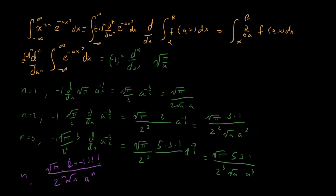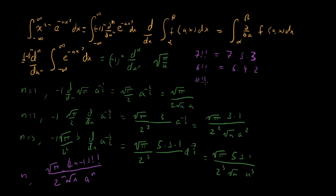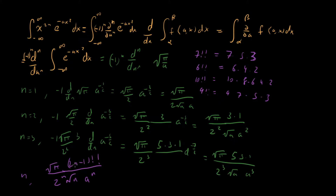The notation for this is the double factorial. For example, seven double factorial equals seven times five times three, and six double factorial equals six times four times two. So the numerator is described by two n minus one double factorial. For n equals two we get three double factorial, which is four minus one double factorial — correct. For n equals three we get five double factorial, which is six minus one double factorial — correct.